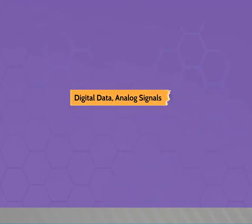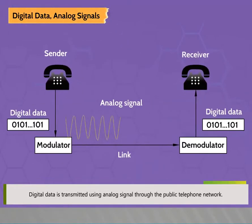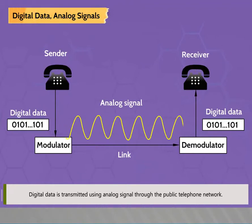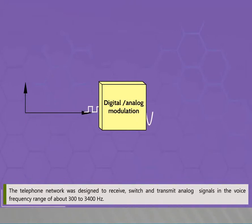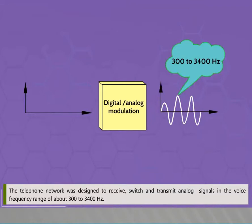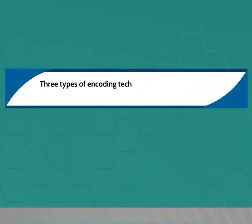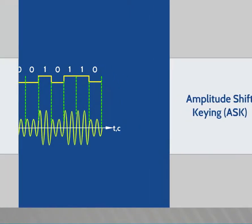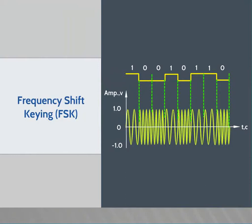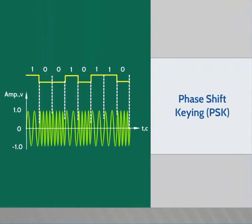Digital data is transmitted using analog signals through the public telephone network, which was designed to receive, switch and transmit analog signals in the voice frequency range of about 300 to 3400 Hz. Modems are used for telephone networks that produce signals in the voice frequency range. Three types of encoding techniques convert digital data into analog signals: Amplitude Shift Keying (ASK), Frequency Shift Keying (FSK), and Phase Shift Keying (PSK).